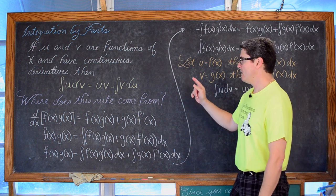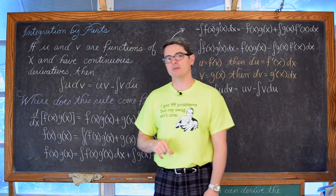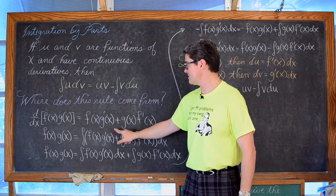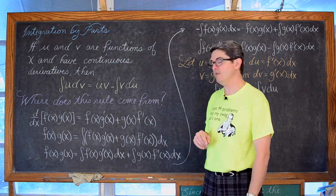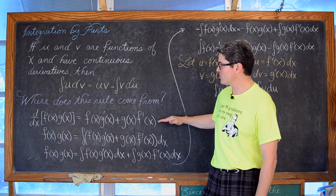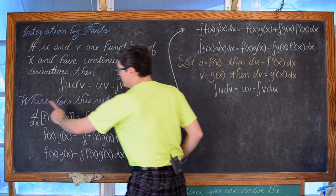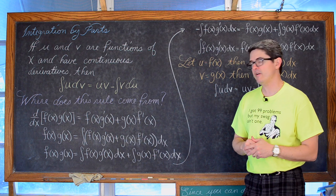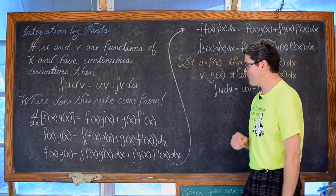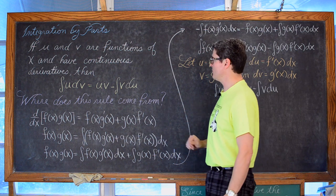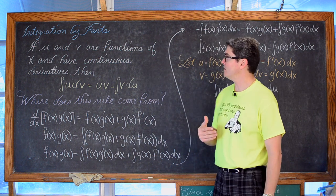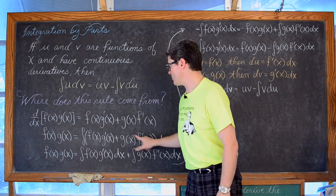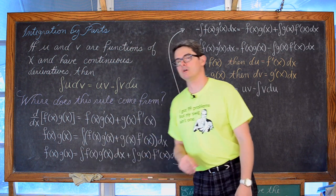So where does this rule come from? The derivative of f times g — the product rule — is equal to the first factor times the derivative of the second, plus the second factor times the derivative of the first. If we integrate both sides, we have f times g equals the indefinite integral of f(x)·g'(x) plus g·f'(x) dx. Now we are integrating two separate terms, so we are going to write a separate integral for each.